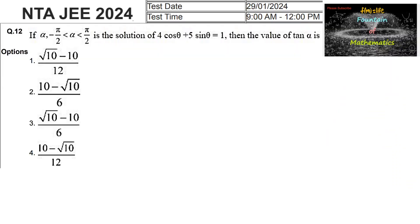If alpha, where alpha lies between minus pi by 2 and plus pi by 2, is the solution of 4cosθ + 5sinθ = 1, then find the value of tan alpha.